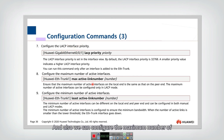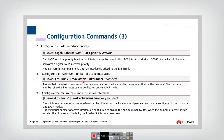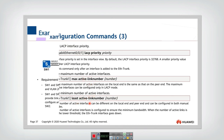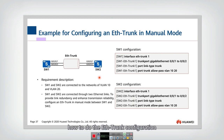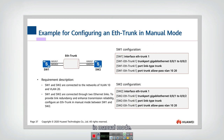We can also configure the maximum number and the minimum number of active interfaces. Those are the basic configurations. Now we give a detailed example for how to do the ether trunk configuration in manual mode.